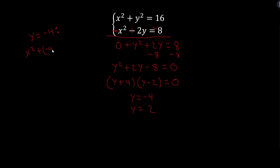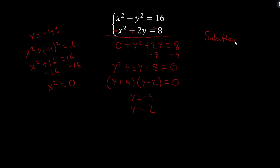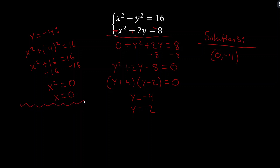Plugging y equals negative 4 into the first equation: x squared plus negative 4 squared equals 16. That gives x squared plus 16 equals 16, so x squared equals 0, meaning x equals 0. Be careful with the order: x is 0 and y is negative 4, so the solution is (0, negative 4). Students often mix this up because they plugged in negative 4 and got 0 — make sure x comes first.